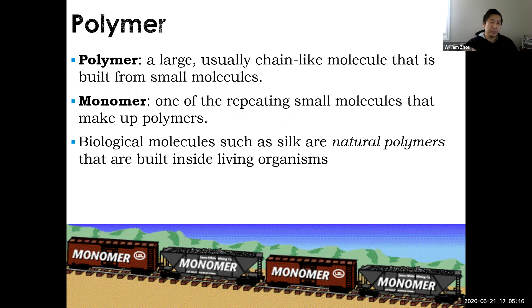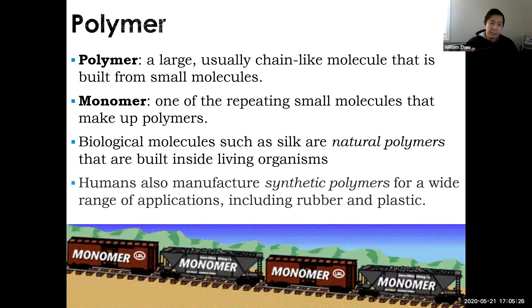A polymer is a repeating subunit of smaller molecules. There are biological molecules like silk. These are natural polymers found in living organisms, and we do not need to synthesize them in the lab. Whereas we can manufacture synthetic polymers. These are not found in nature. We made them through our innovation, and they have a wide range of applications, including rubber and plastic, which we will talk about later.